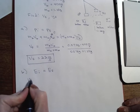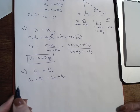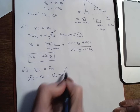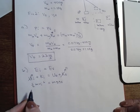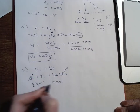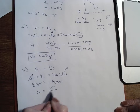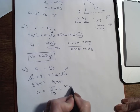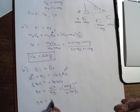Setting up: gravitational PE initial plus KE initial equals U-final plus K-final. There's no potential energy at the start, and no kinetic energy at the finish, so one-half mv-squared equals mgy-final. The masses cancel, giving y-final equals v-initial-squared over 2g. Plugging in: 22 meters per second squared divided by 2 times 9.8 meters per second squared gives y-final equals 25 meters.